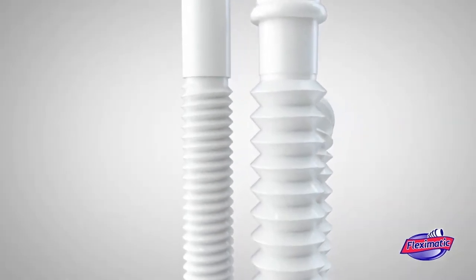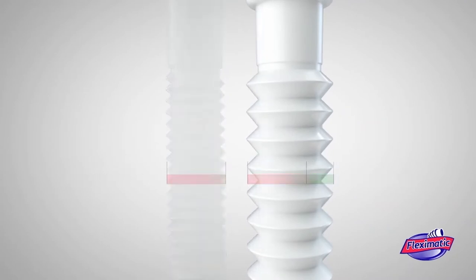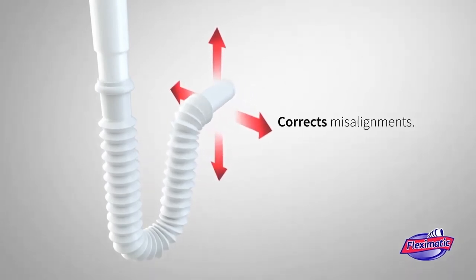Unlike other drain traps, Flex-O-Matic's practical trap has a large diameter flexible corrugated pipe that facilitates water drainage without clogging and corrects misalignments between the cabinet and the drainage pipe.